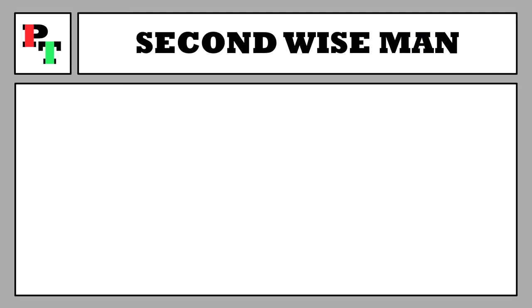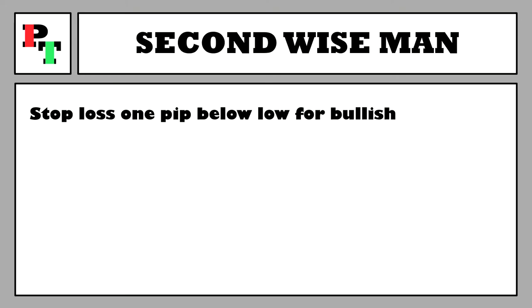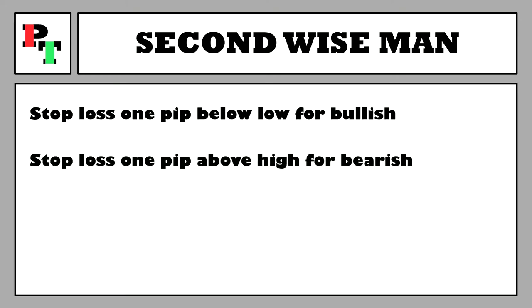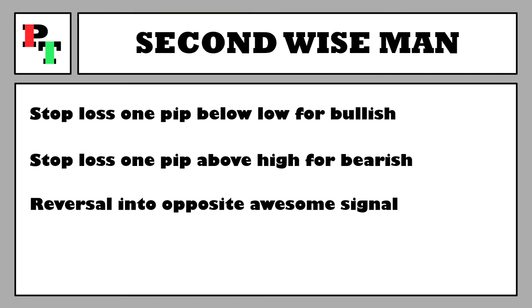For the stop loss with Wise Man 2, it's placed just outside the extreme point of price — one pip below the low for a buy trade and one pip above the high for a sell trade. If we get three consecutive Awesome Oscillator bars closing against our trade's direction, we set a stop loss at the edge of the third candle. We also manually trail the stop loss to be just outside the extreme price of the previous four periods, splitting the difference between Bill's suggested three to five candle range.